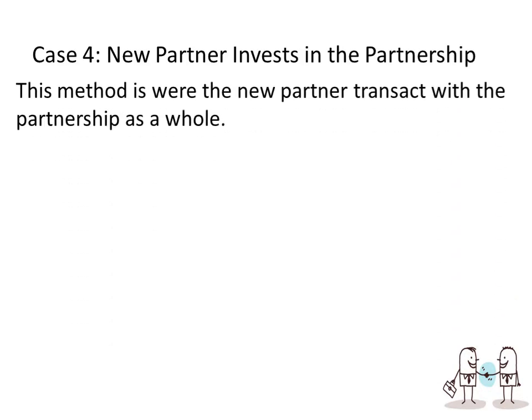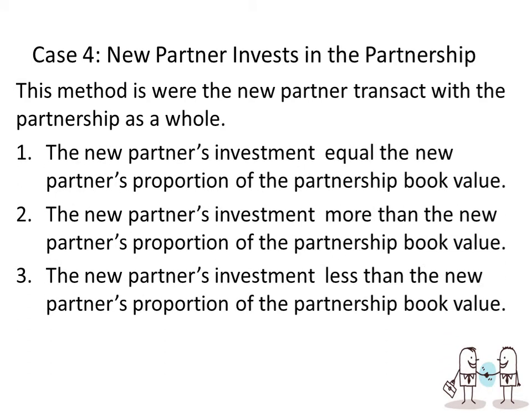Case 4 — the new partner invests in the partnership. This method is where the new partner transacts with the partnership as a whole, unlike the previous method where the new partner purchases directly from individual partners. Because the transaction is with the partnership, it will be recorded in the partnership books. The new partner's investment could be equal to, more than, or less than the new partner's proportion of the partnership book value.